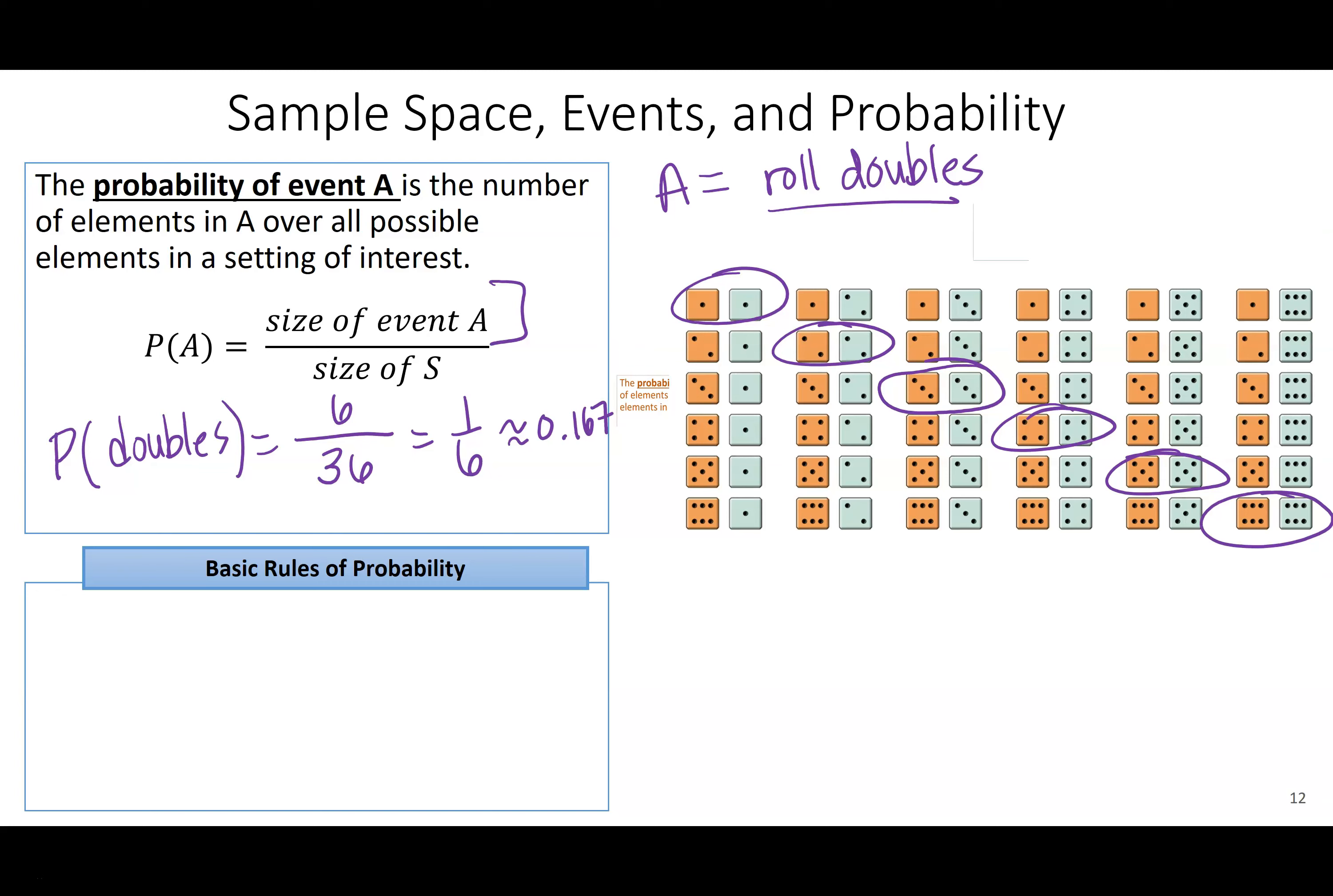There are some basic rules of probability we have to make sure we observe. So all probabilities have to be between zero and one. This makes sense because you can't have a negative probability. You can't have a probability above one because the probability of one means it always happens. You can't happen more than always, just like you can't happen less than never.